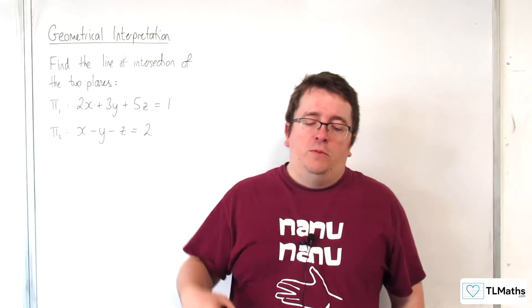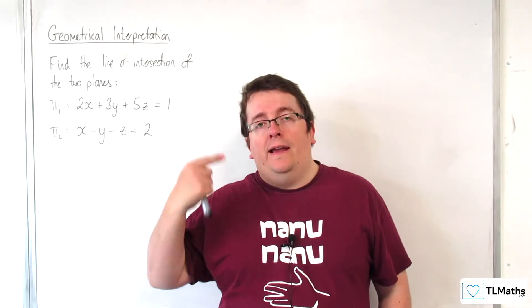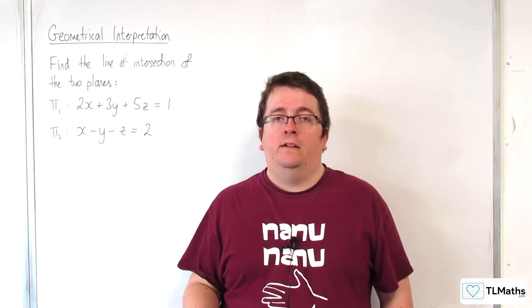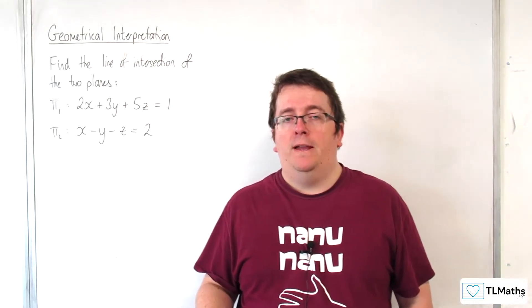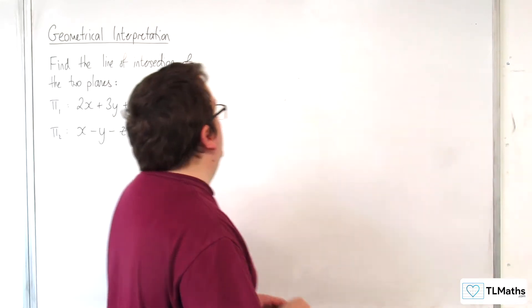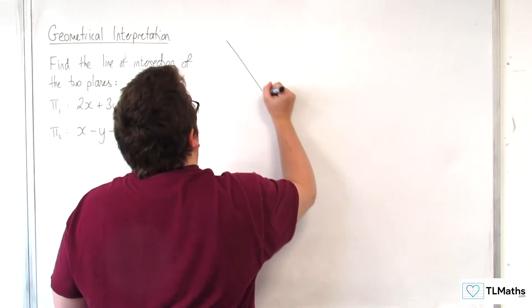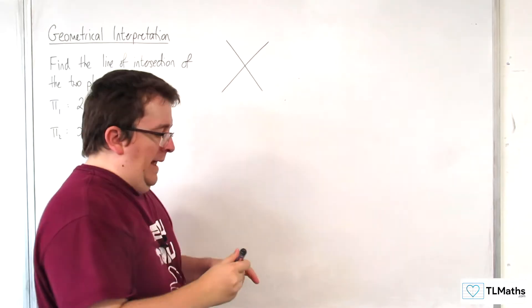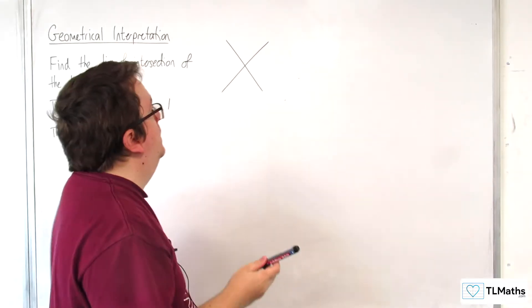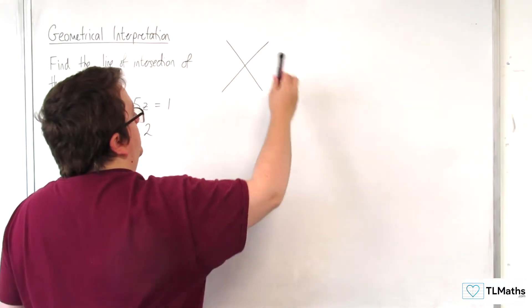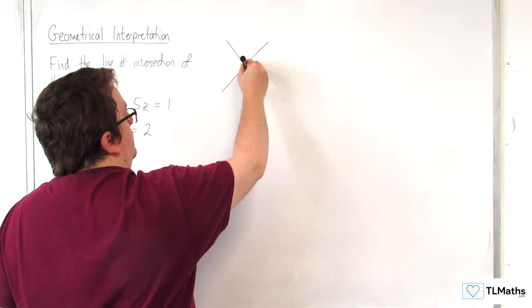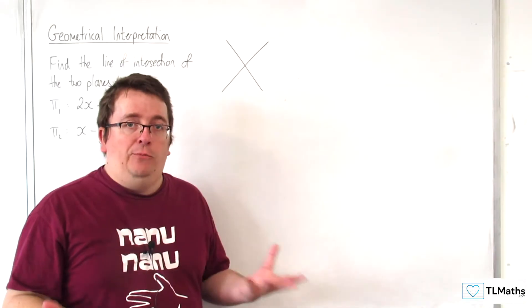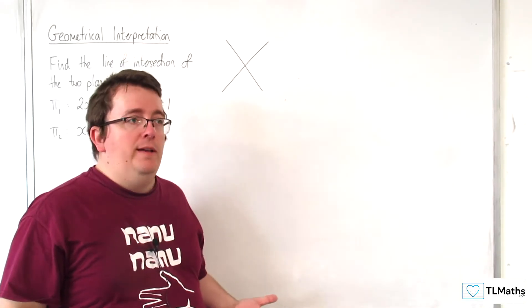So, the vector product allows you to find a vector that is perpendicular to two other vectors that you give. So, the idea is that if you've got your two planes and the line of intersection, if you're looking at this side on, the line of intersection is coming out of the board. This is in the direction of a vector that is perpendicular to both of those planes.